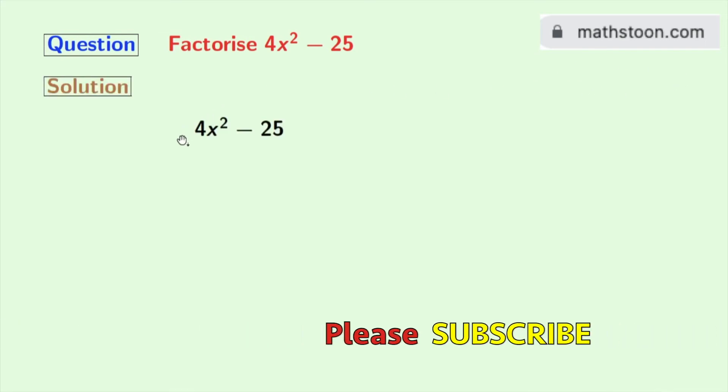This is our given expression 4x² minus 25. Now to factorize this, we will firstly express each of these terms as a square of something.